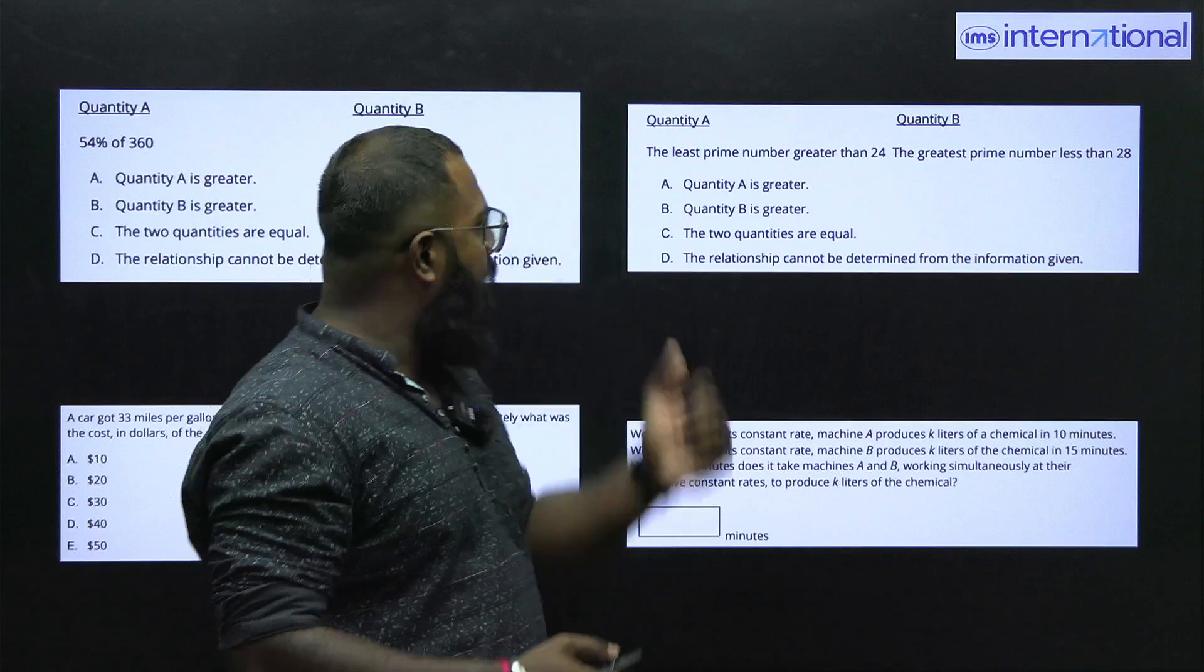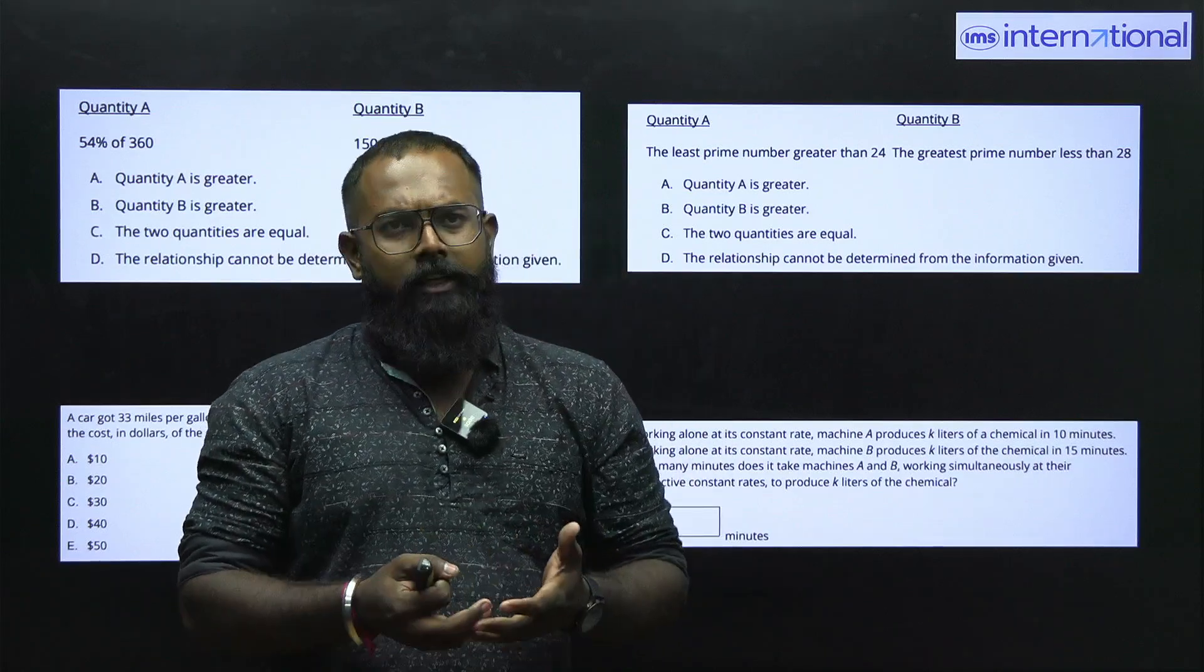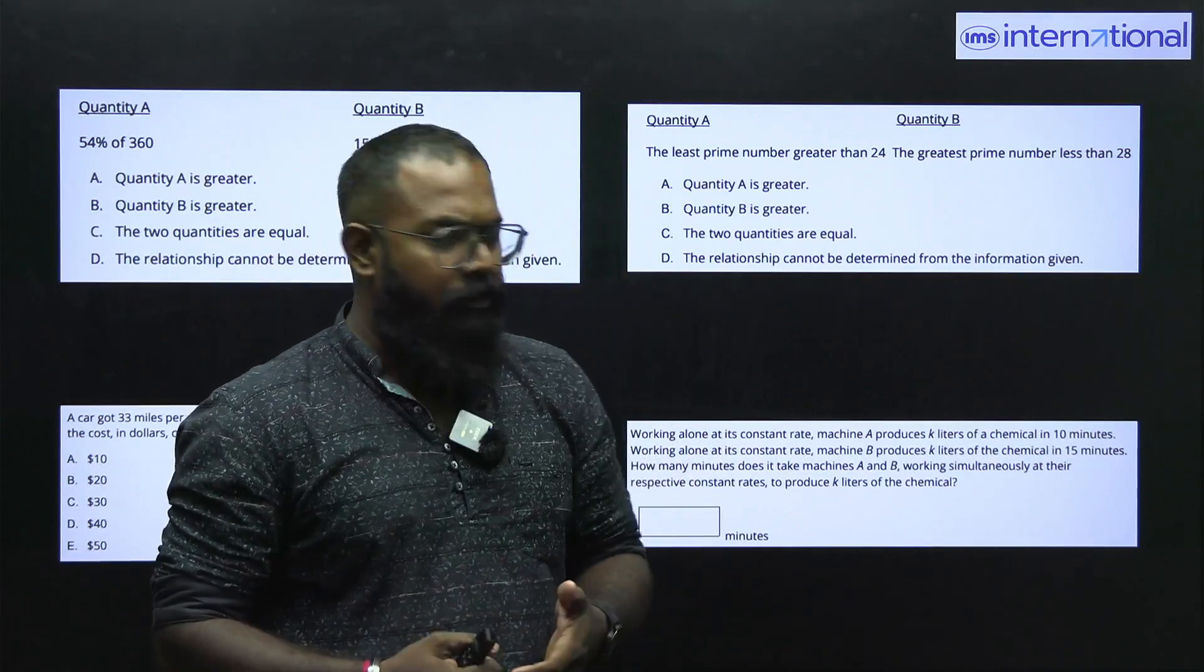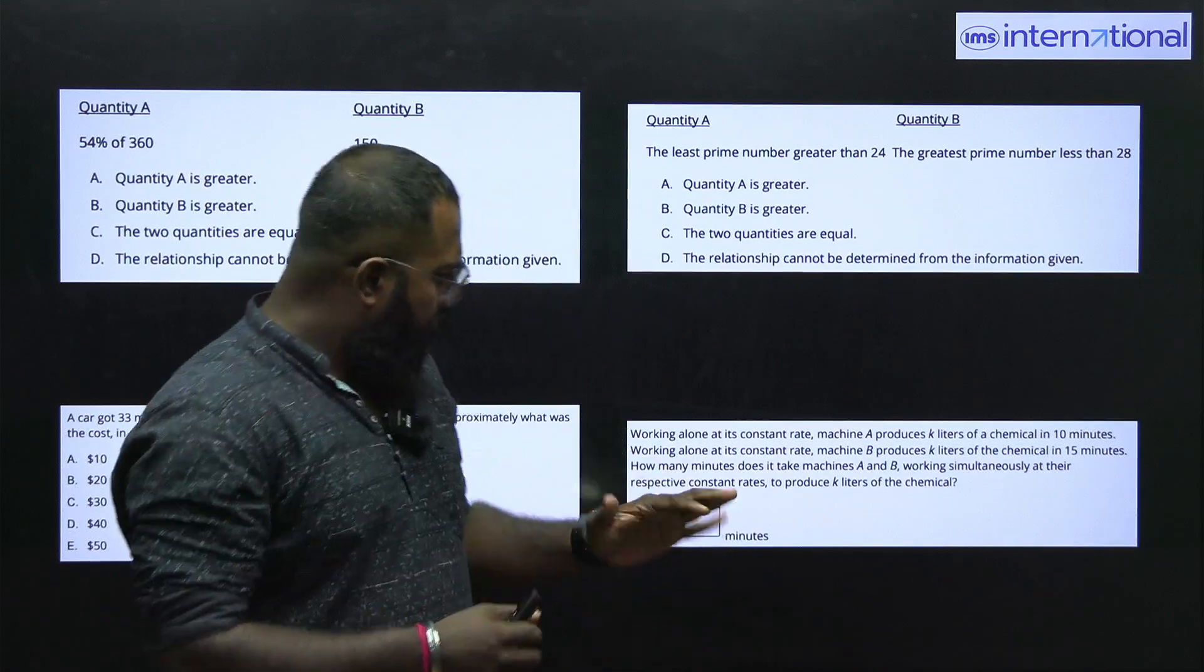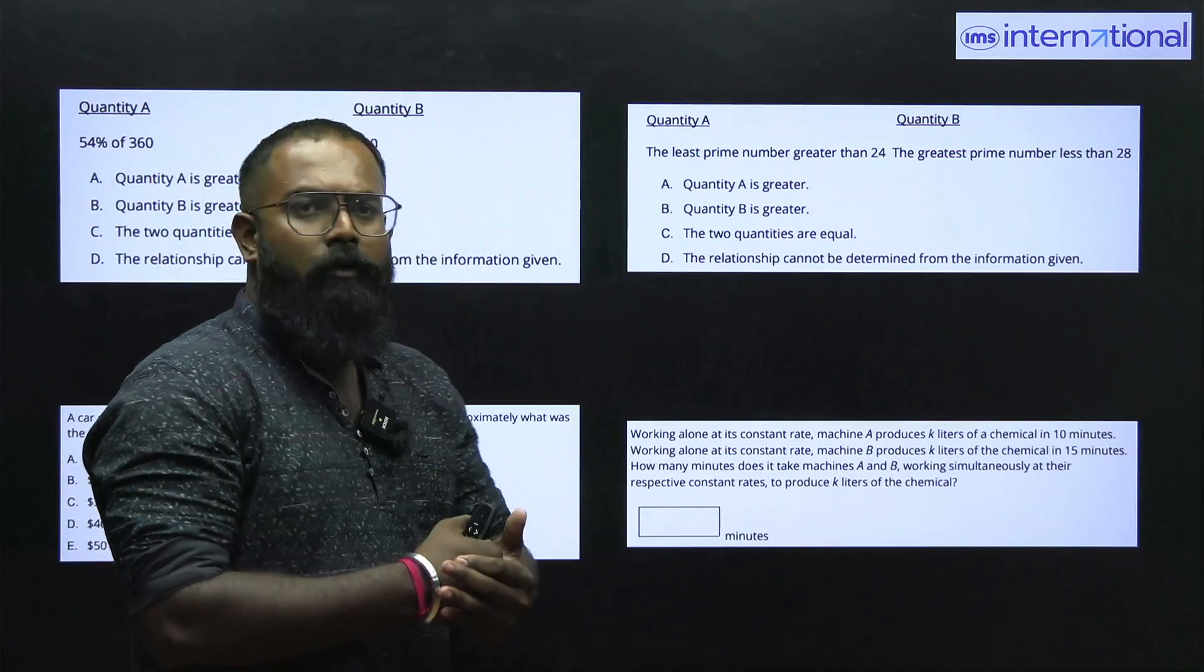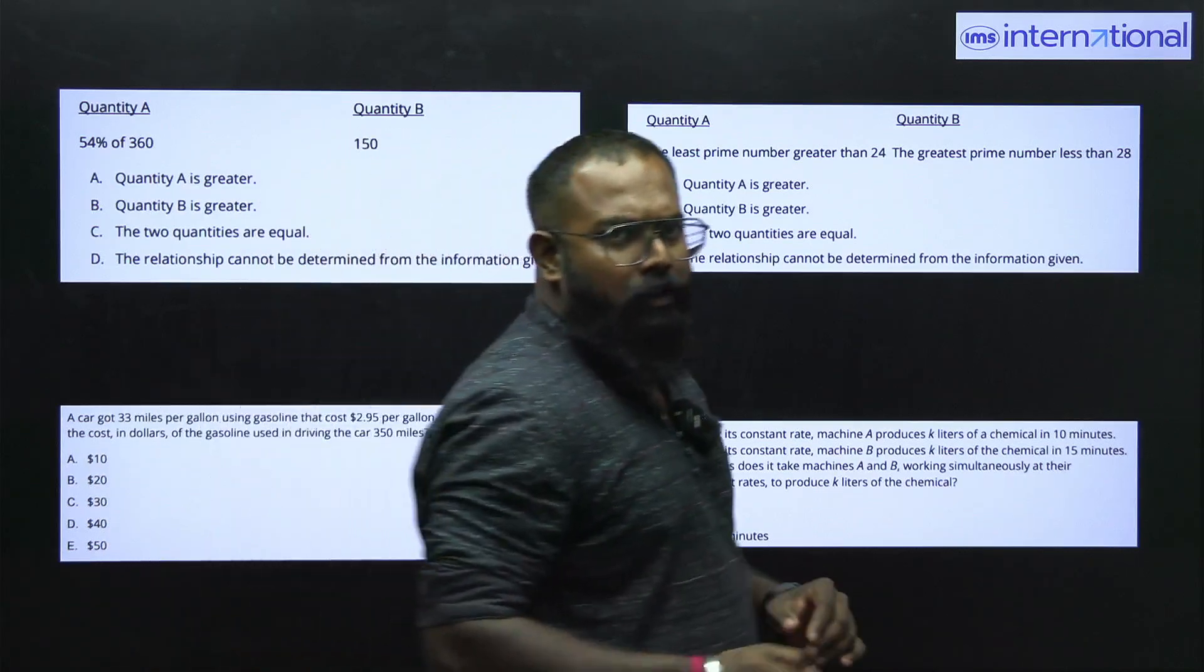In the third one we can see that we have to use our knowledge of prime numbers to solve this question, but in the next one we can see a mixture of proportion as well as time and work. Let's move to the next topic.